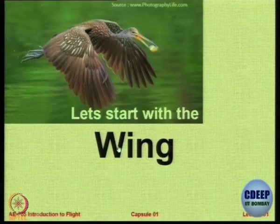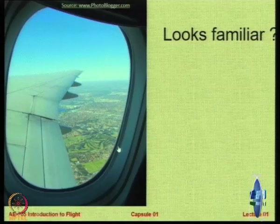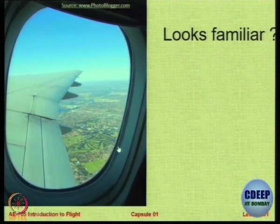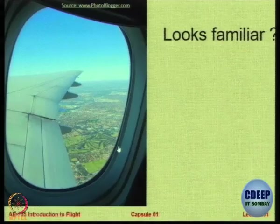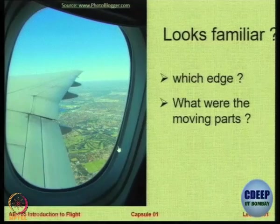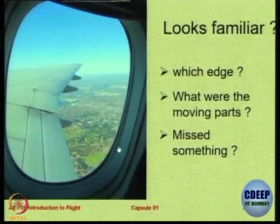The first component of the aircraft I want to touch on is the wing, which is the major component. Without a wing, it is very difficult to have an aircraft. Here is a photograph of the wing as seen from a window, and you can see that the wing is not just one single piece — it contains several sub-assemblies, a few of which are visible in this photograph.